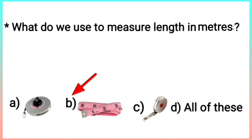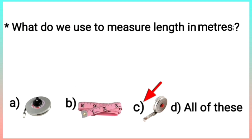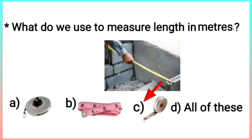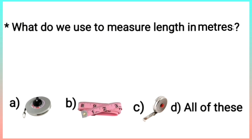Option B is also a measuring tape that we use to measure length. Option C is also a measuring tape that we use to measure length in meters. So it's clear that options A, B, and C are all used to measure length in meters. Therefore, the correct option is option D.